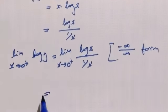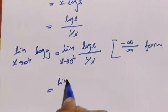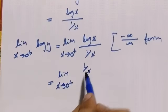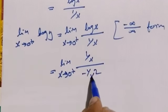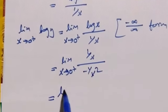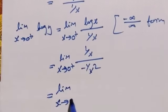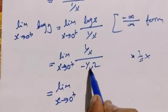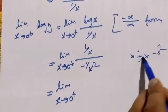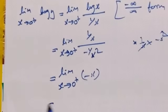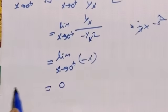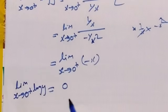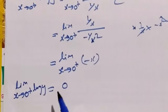Now we apply L'Hôpital's rule. Limit as x approaches 0 plus: log x divided by 1 over x. Differentiate: 1 over x divided by minus 1 over x squared. This simplifies to limit as x approaches 0 plus: 1 over x times minus x squared, which equals minus x. Now apply the limit: 0. So limit as x approaches 0 plus, log y equals 0.